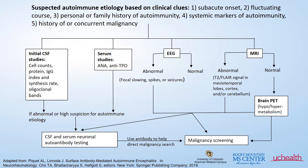This figure summarizes the workflow for autoimmune encephalitis in terms of looking through these diagnostic features. When thinking about an autoimmune etiology, it's often suspected based on clinical clues — this subacute onset with rapid progression of symptoms over the course of months. A fluctuating course can sometimes be a clue of autoimmune disease, as well as either personal or family history of autoimmunity. We also sometimes look for systemic markers of autoimmunity, even though these are nonspecific blood tests, they can provide clues.